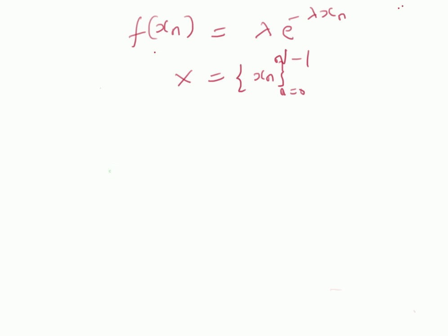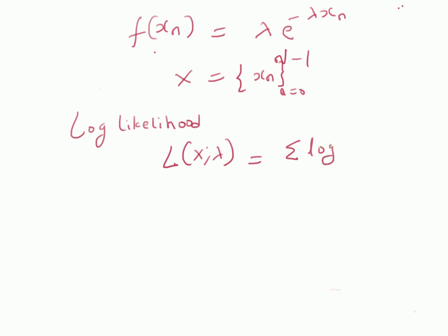For this purpose, let us define the log-likelihood function. The log-likelihood L(x, lambda) is equal to the summation of the logarithm of the density function f(x_n) for n from 0 to n minus 1. Here we assume that the observations x_n are independent of each other — that is, x1, x2, x3, x4, x5, and so on are all independent.